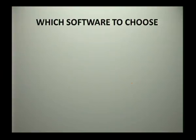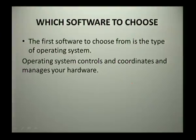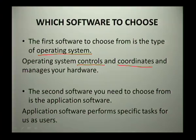Now we move to software. Think of all the hardware you had to choose from — it's a lot, and if you don't understand what each piece does, it can be very confusing. Software is similar. The first software you need to choose is your operating system. The operating system controls and coordinates your hardware. Without it, you won't be able to control or coordinate your hardware, and it's obvious that all computers must have an operating system.